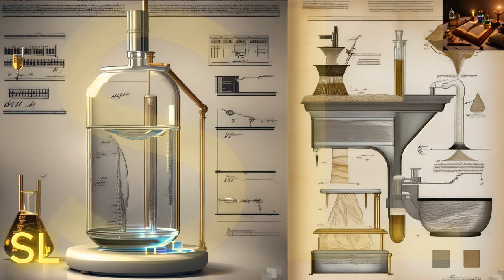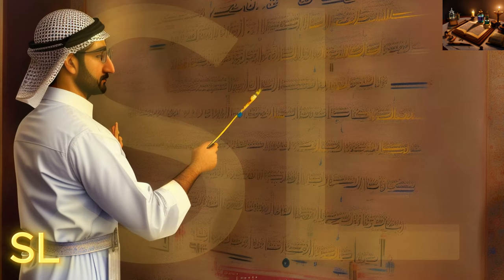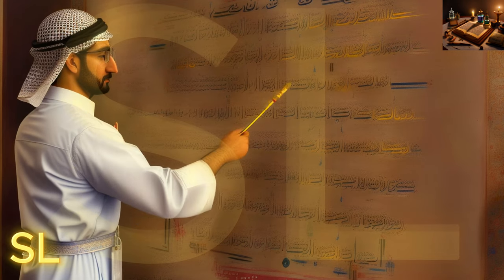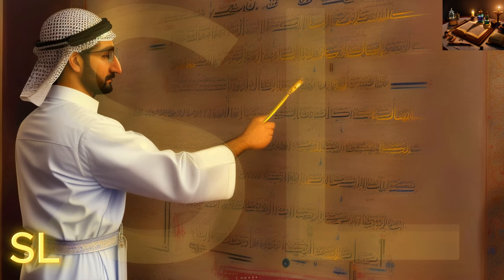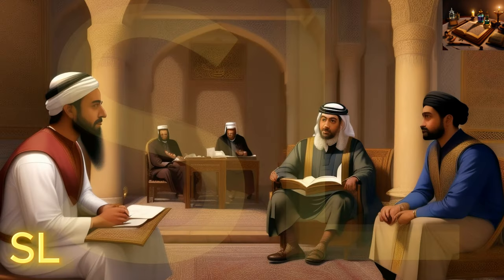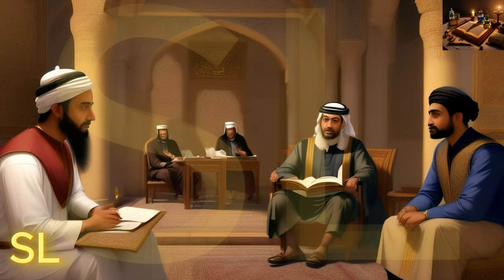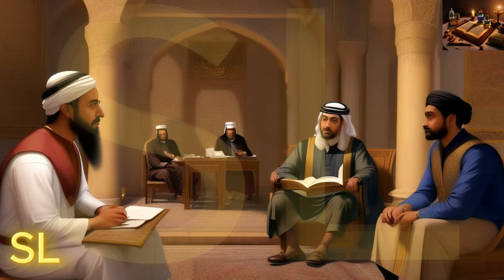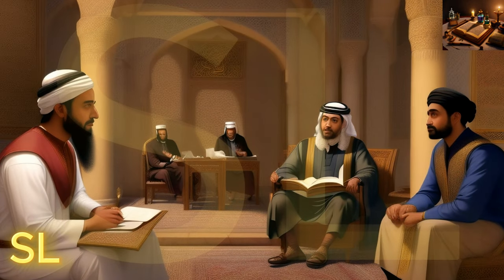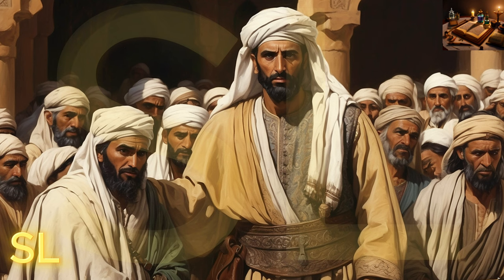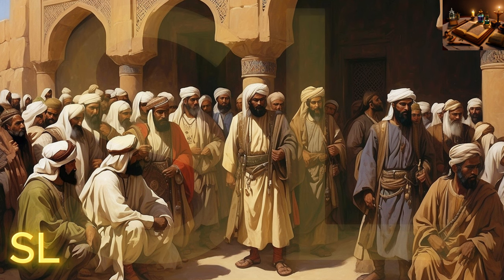In the year 766 AD, he met the minister Jafar al-Barmaki, who was one of the greatest intellectuals of the Abbasid era. Jafar al-Barmaki was impressed by Jabir Ibn Hayyan's intelligence and scientific abilities and provided him with financial and moral support.